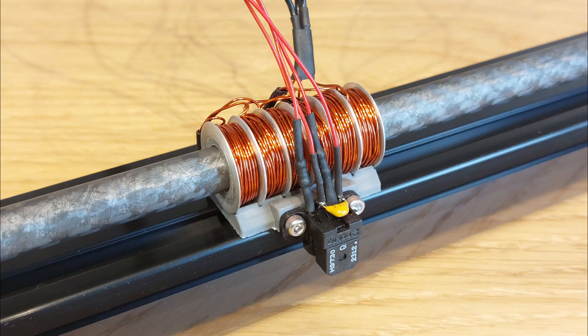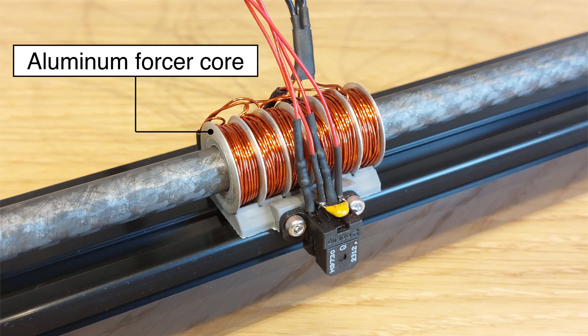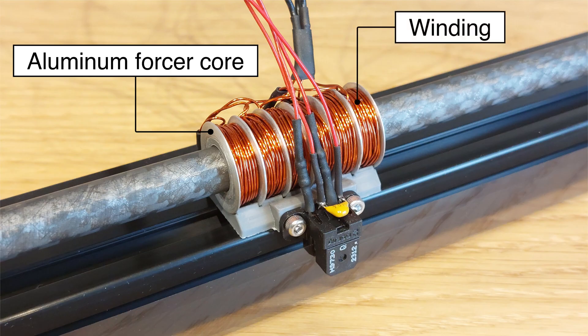To build a tubular linear motor, I used an aluminum forcer core because of the heat generated in the windings. Around this core I wound six 50 turn 24 gauge windings.